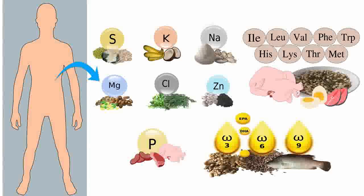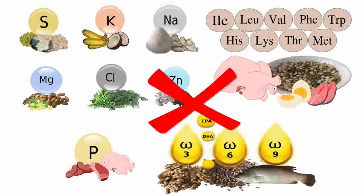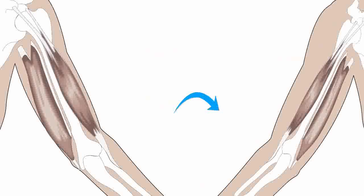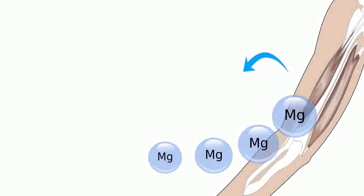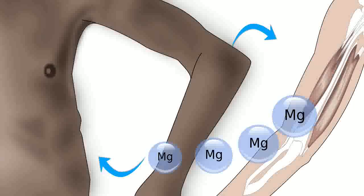Type 2 nutrients are not stored in the body. In a deficiency, the body may start to break down its tissues or muscles. This releases the type 2 nutrient in which the body is deficient, which will then be used for other tissues of the body.